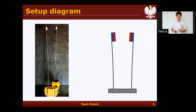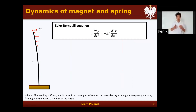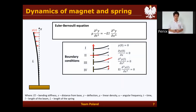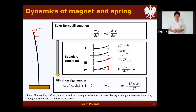Let's take the first part of our setup: the spring and the magnet. We model our beam using the Euler-Bernoulli equation and then use four boundary conditions describing its state. For the free cantilever: the first boundary condition states the lower end is fixed, the second that it's straight, the third that there's no curvature on the free end, and the fourth that there's no shear force on the free end. Applying these boundary conditions to the Euler-Bernoulli equation, we get the vibration eigenmodes.